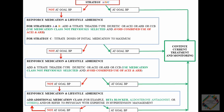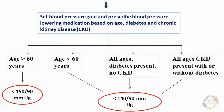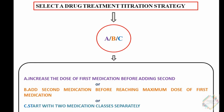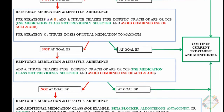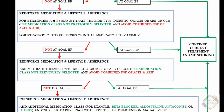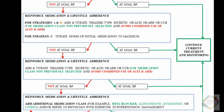To recollect the treatment algorithm: initially, we implement lifestyle interventions; then categorize patients into four groups and set a BP goal; then initiate first-line therapy; select a titration strategy A, B, or C; and follow the protocol depending on whether the goal BP has been maintained or not. I hope you have clearly understood the treatment algorithm of hypertension.